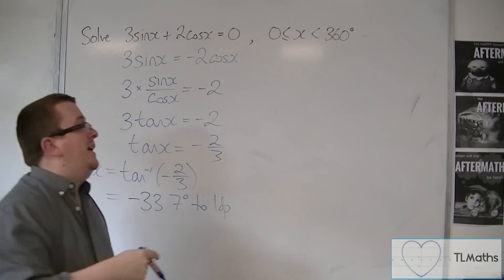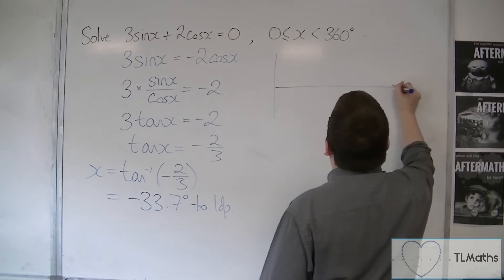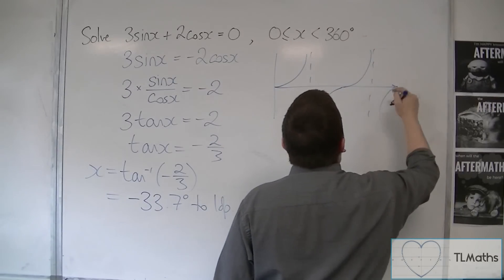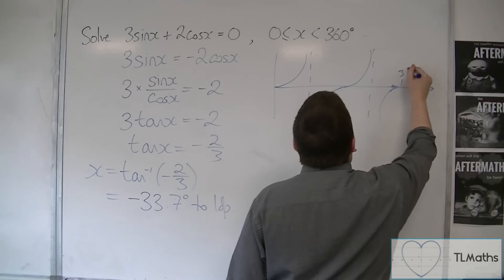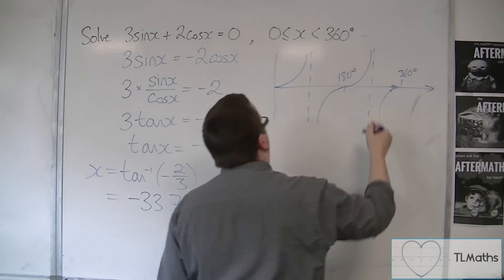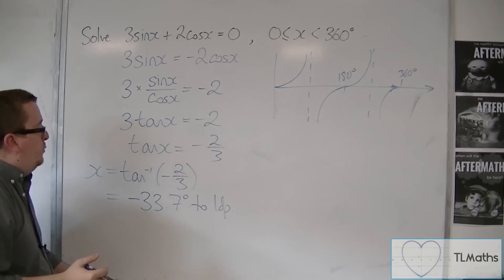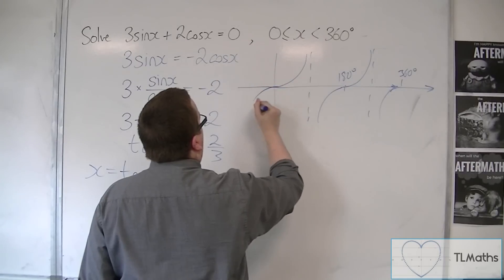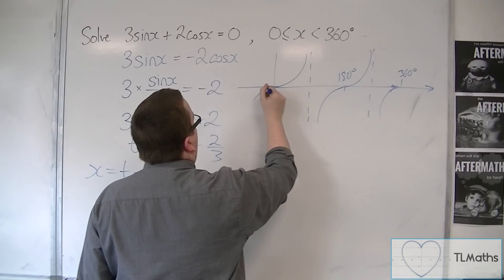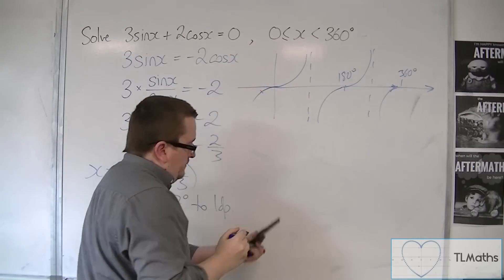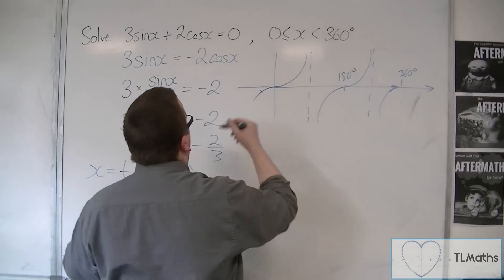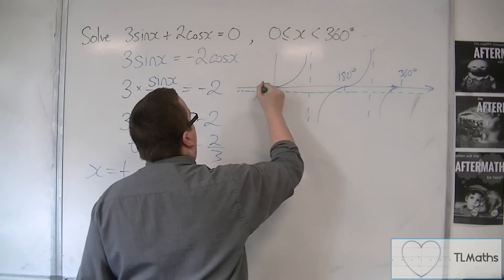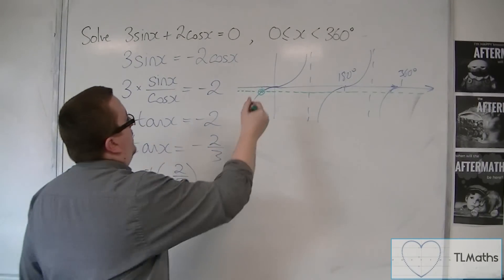Now we're going to sketch tan between 0 and 360. There's 360, there's 180. Now the value that we've got is actually minus 33.7, which is off the scale. So in actual fact, we have found this value here.